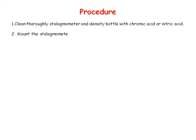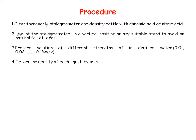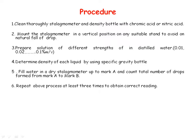Now we will see the procedure of the experiment. The first step is cleaning: clean your stalagmometer and density bottle with chromic acid or nitric acid. Then mount your stalagmometer in a vertical position to avoid any unnatural fall of drops. Then prepare different strengths of surfactant solution from 0.01 to 0.1 percent weight by volume, making 10 dilutions in distilled water.